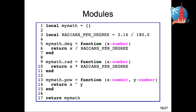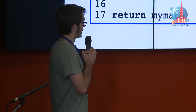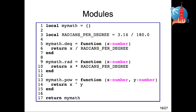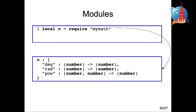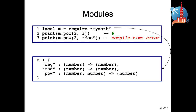Using this idea of refining table types is the central idea to defining modules and doing object-oriented programming in TypedLua. Here is a common way of defining a module in Lua: we start declaring a local value with an empty table and then populate it with the functions that should be exported by the module. When we use this module by calling require — which is also a primitive in TypedLua — we assign this table type to the variable M, representing the type of the module myMath. So when we use this module, we get static typing.